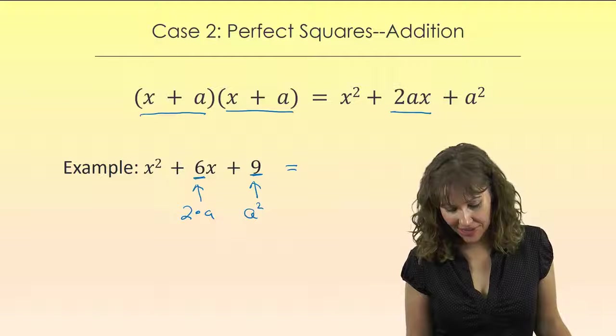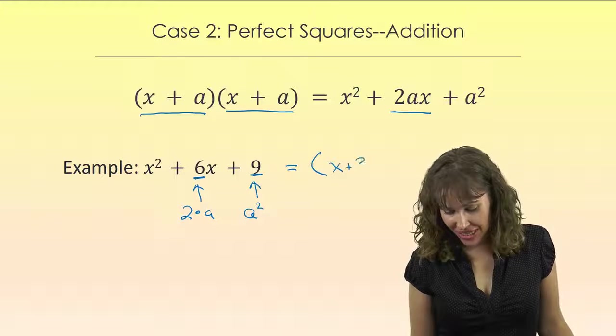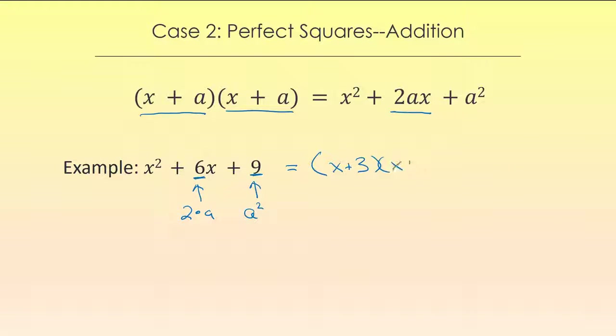So this is going to factor into x plus three times x plus three. And if you're ever unsure about your factoring, just multiply it back out. We can see that we'll have two terms of 3x that'll add up together to give us this 6x, and 3 times 3 is 9, just like we wanted.